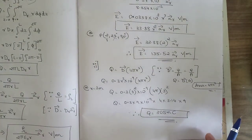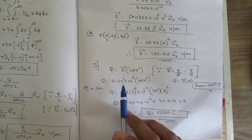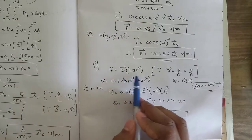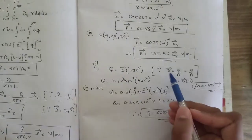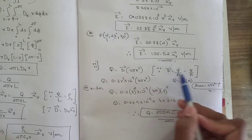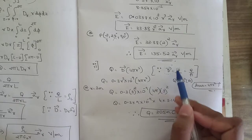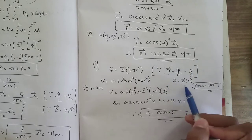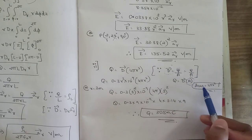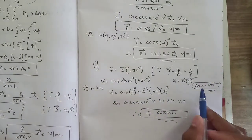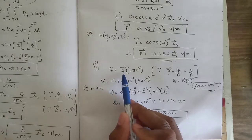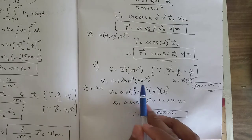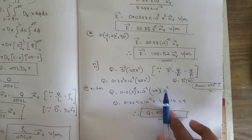For the second sub-question, total charge within the sphere at r = 3 meter: we use the relation Q = D × 4πr². This comes from D = ψ / A, i.e., electric flux per area, and since ψ = Q, we get Q = D × A. The area of a sphere is 4πr², so Q = D × 4πr². Substituting D = 0.3r² × 10⁻⁹ into 4π r².